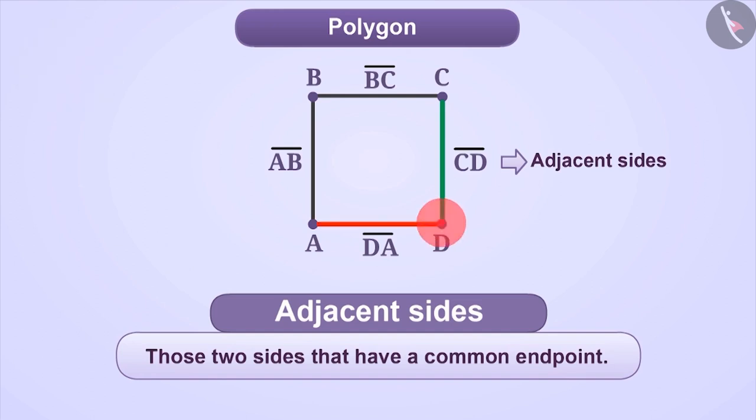Absolutely correct. Since D is common in side CD and DA and C is common in side CD and BC. Therefore, DA and BC are adjacent sides of CD.